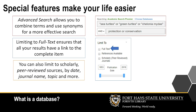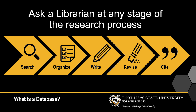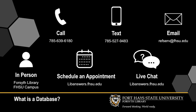Limits to scholarly peer-reviewed journal articles, by date, to a certain type of periodical or a specific journal, and more help you create a precise, focused search, cutting down on time spent looking through irrelevant results. Librarians can help at any stage of the process, so please feel free to contact us.